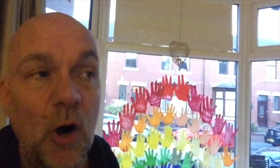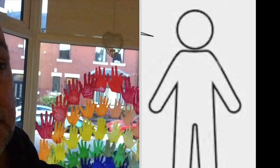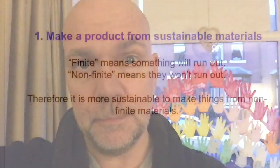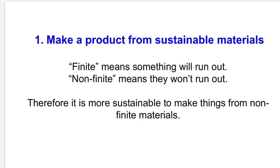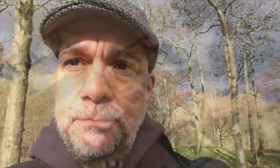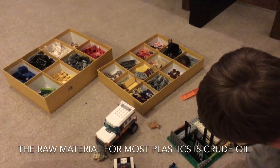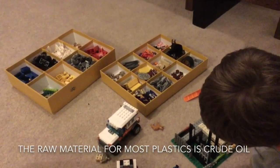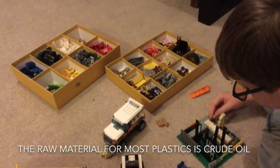Well, that sounds really straightforward, doesn't it? The first thing we've got to think about is making products from sustainable materials that won't run out. Some materials are more sustainable than others. For example, wood is a really sustainable material because if you cut it down to use it to make products, you can just plant more trees. Other materials like plastic are far less sustainable because the raw material for most plastics is crude oil, and that's running out.